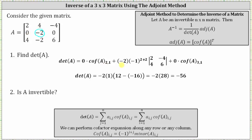We have plus negative two times cofactor two comma two, which is equal to negative one raised to the power of two plus two. The exponent is two plus two because the element is in row two, column two. Then we have times the minor — the determinant of the matrix formed after eliminating row two and column two. This leaves us with a two-by-two determinant where row one is two, negative four, and row two is four, six.